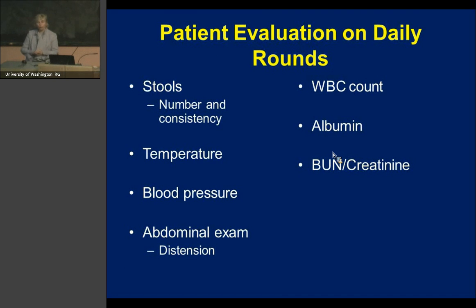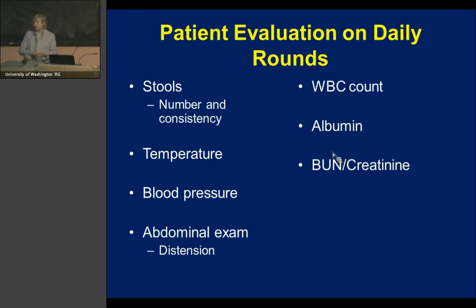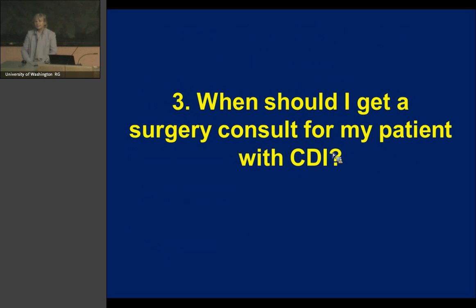On rounds, monitor stool number and consistency, fever, blood pressure, and abdominal distension on exam. Laboratory parameters to check include white count, albumin, BUN, creatinine, and lactate in the severe and complicated patients. This leads to the third question: when do I get a surgery consult for my patient with C. diff?